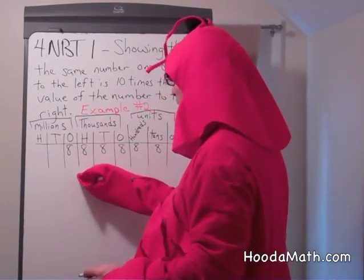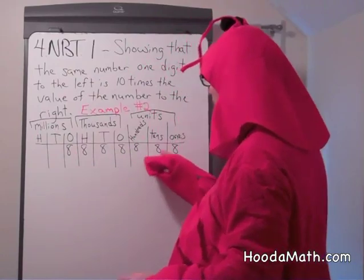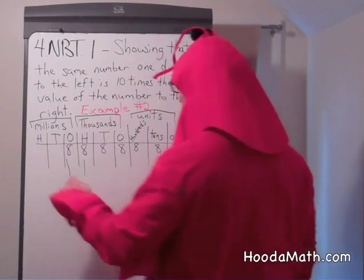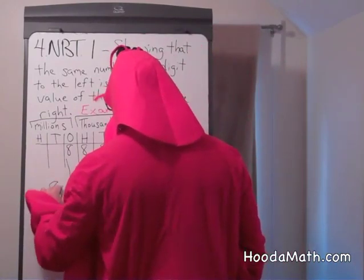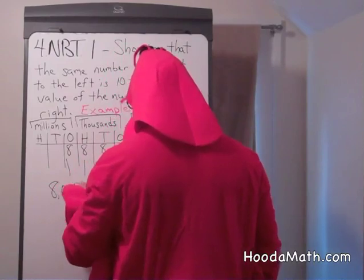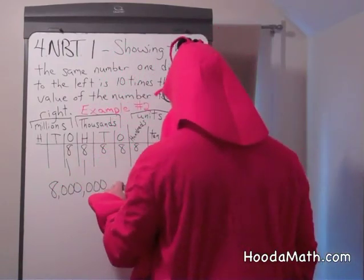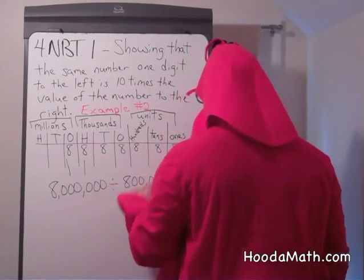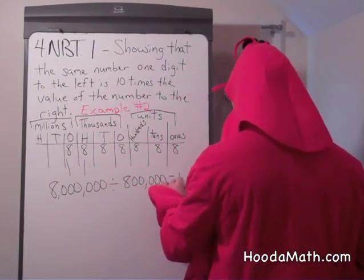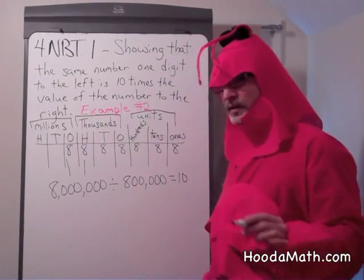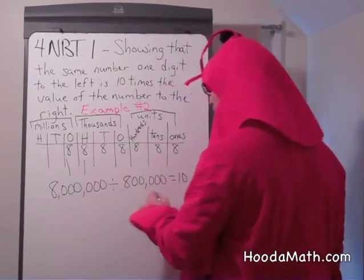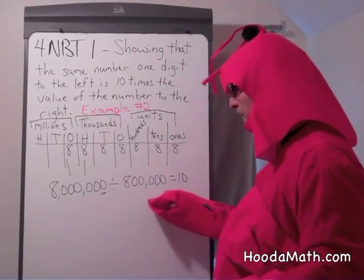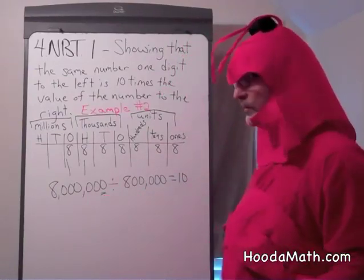This is 8,888,888. So I'm going to compare these two digits: 8,000,000 — how much bigger is it than 800,000? Well, we'll divide. The answer is 10. One way I know very quickly is it has all the same digits except there's one more zero here. When you multiply a number by 10 you add a zero with whole numbers.